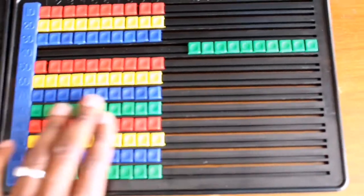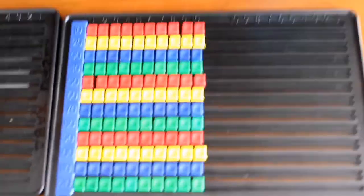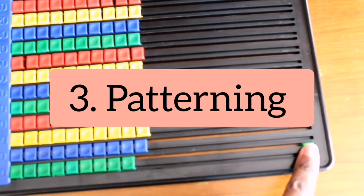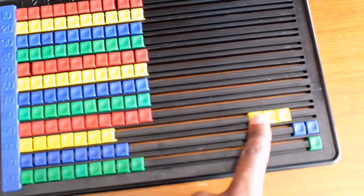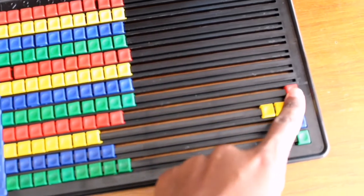For patterns, like for this one it's green, two blues, three yellows, and maybe one red. So you can do this for a child and then they will just copy the pattern.